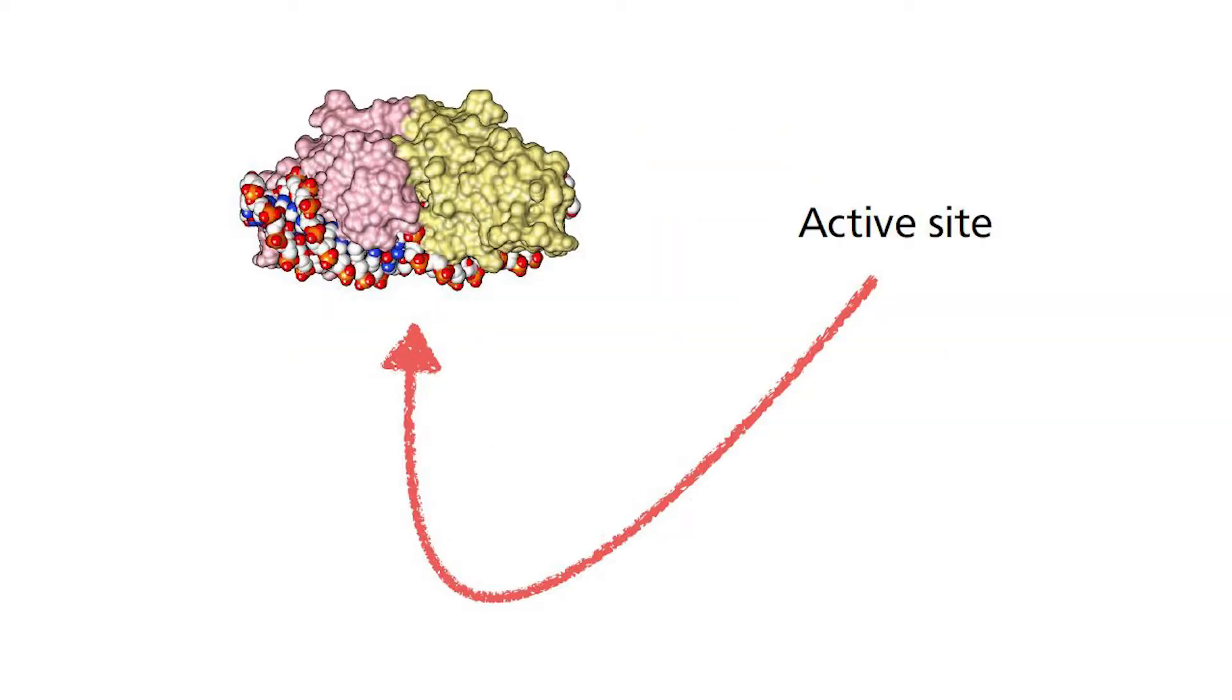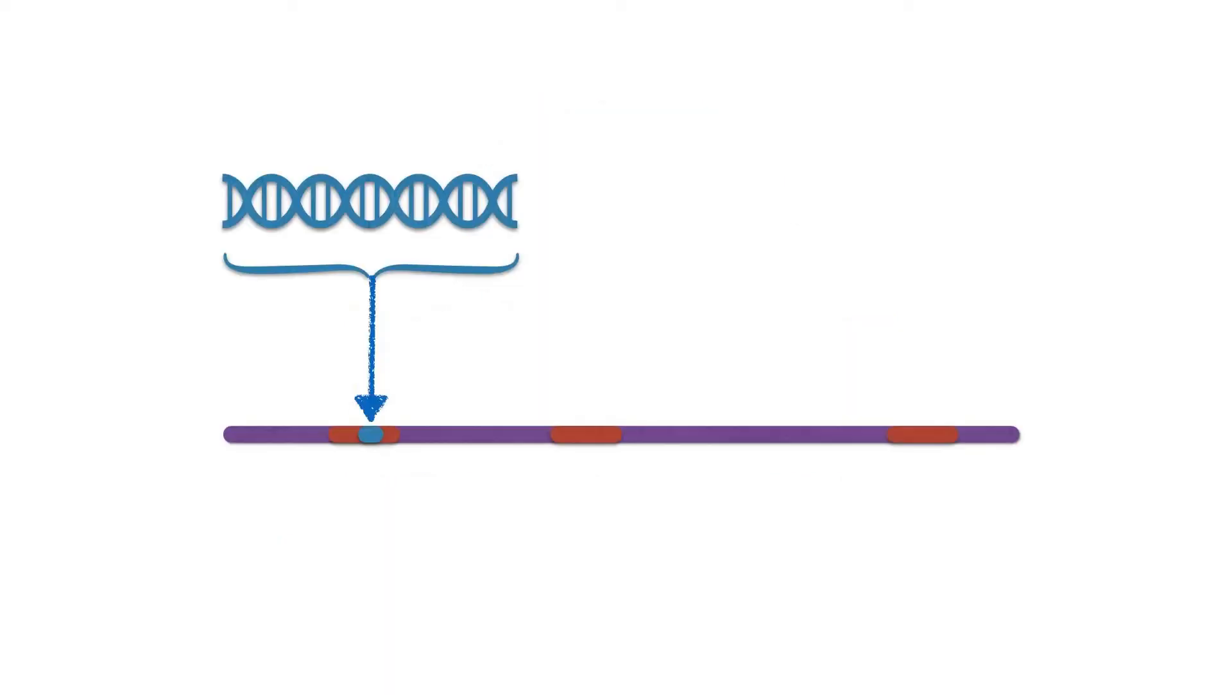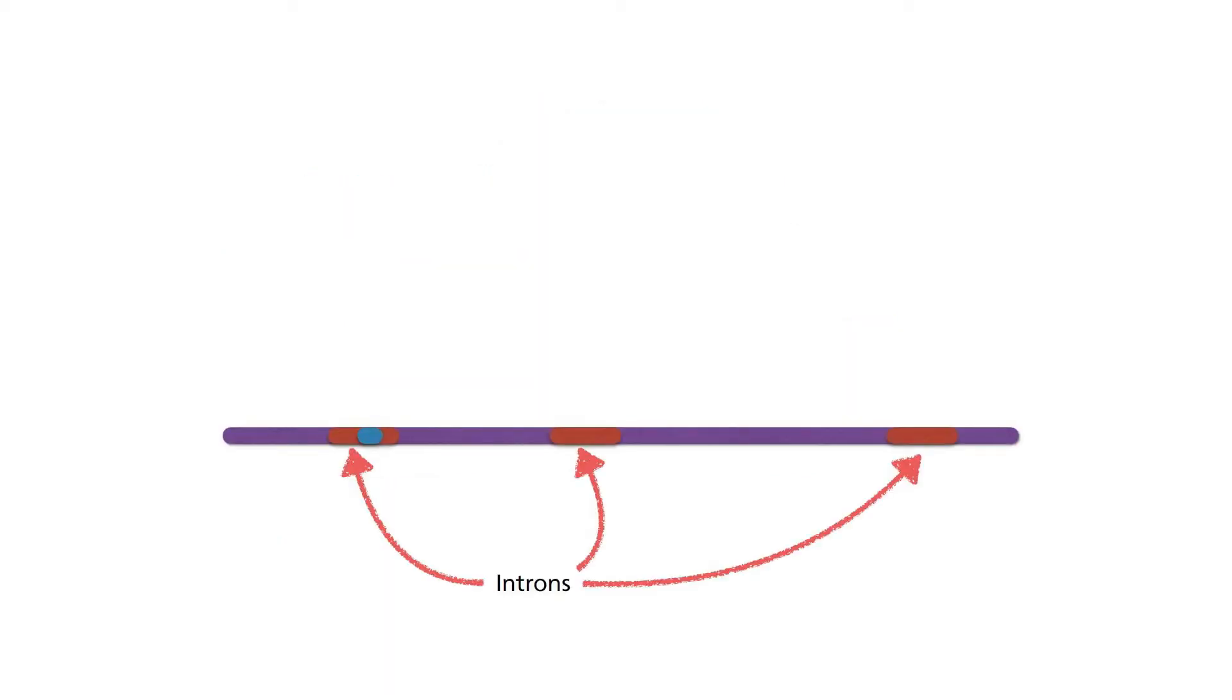This enzyme has an active site that recognizes a specific DNA sequence consisting of 22 nucleotides. Interestingly, this sequence is found inside an intron of an rRNA gene. So, how does it work?